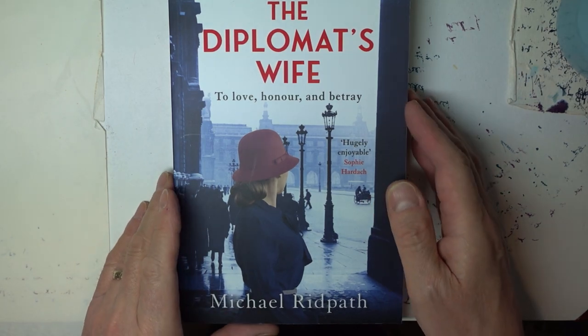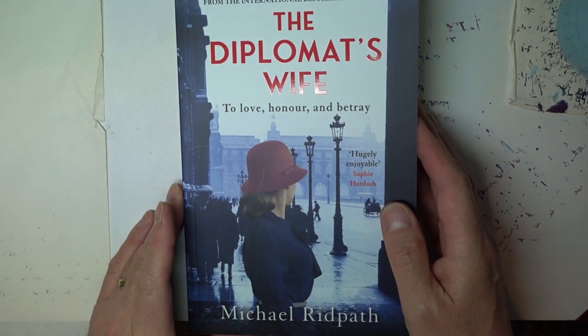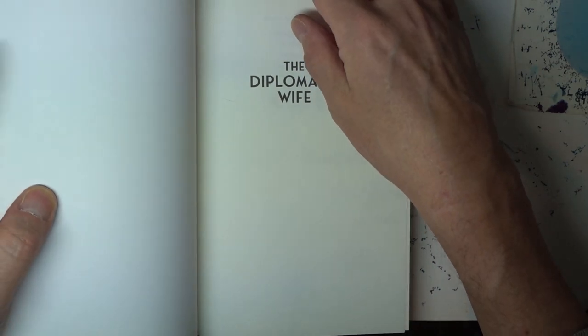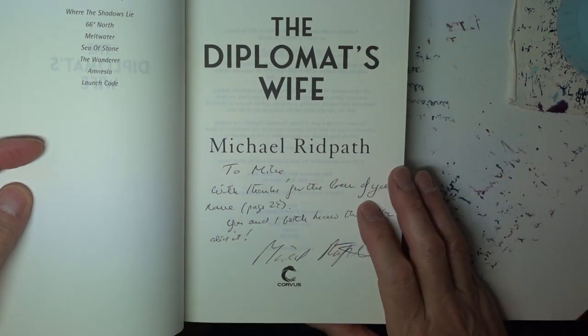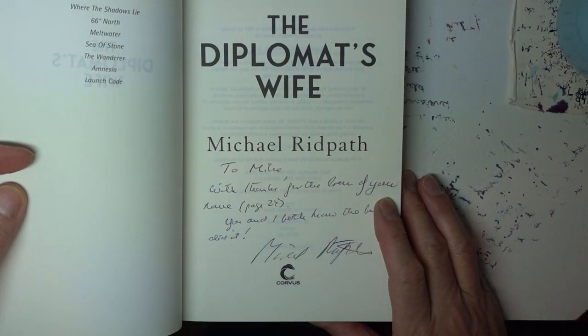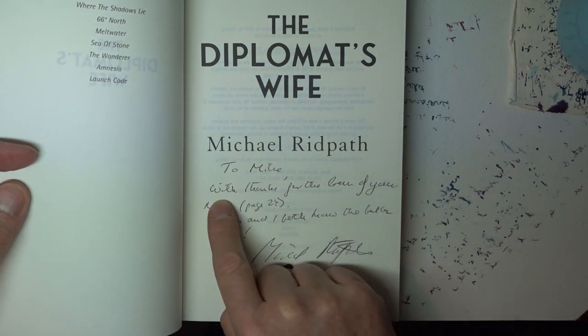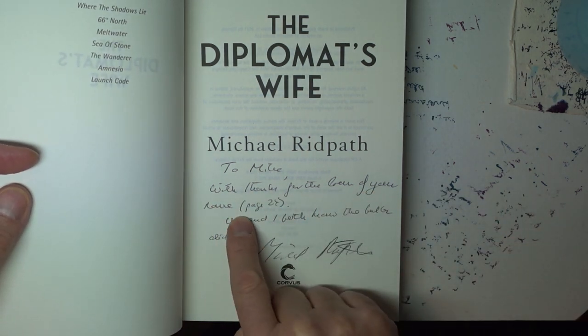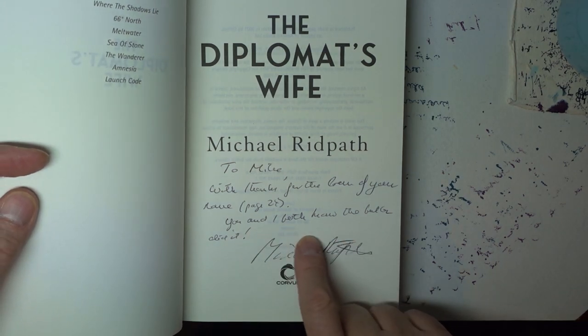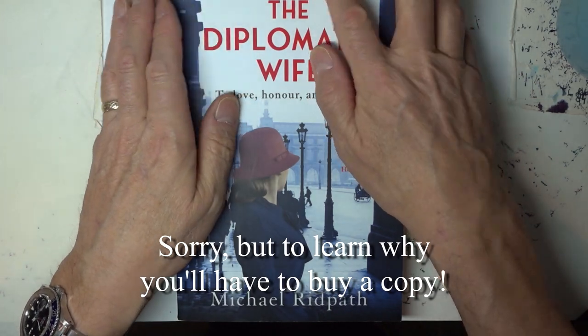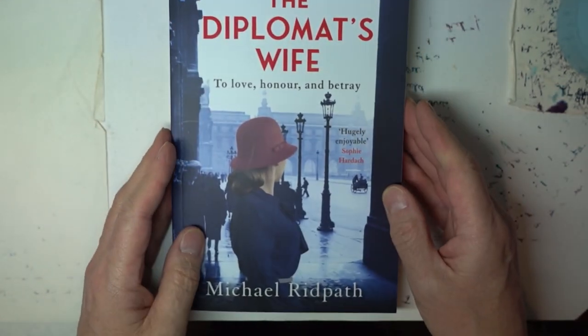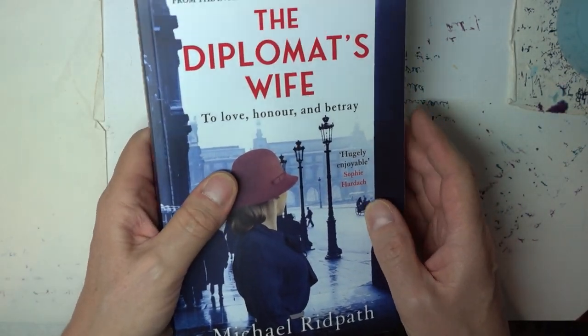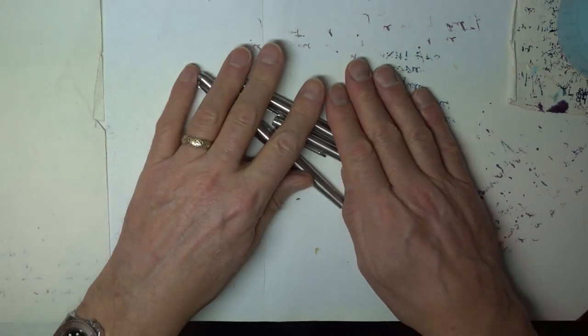Second book just arrived this week from a lovely bloke, Michael Ridpath. If you haven't read any of Michael Ridpath's books, go and buy one. He's written a huge number. His thrillers are basically amongst the best thrillers that are being written today. And he writes to Mike with thanks for the loan of your name on page 24. You and I both know the butler did it. Michael Ridpath writes superbly well. So I can thoroughly recommend that. But I'm not here to talk about that. I'm here to talk about these.